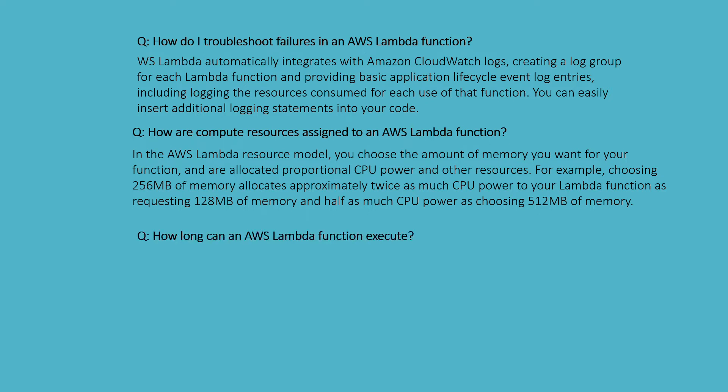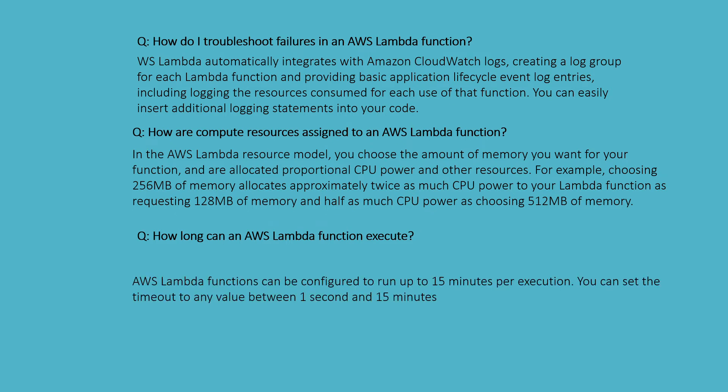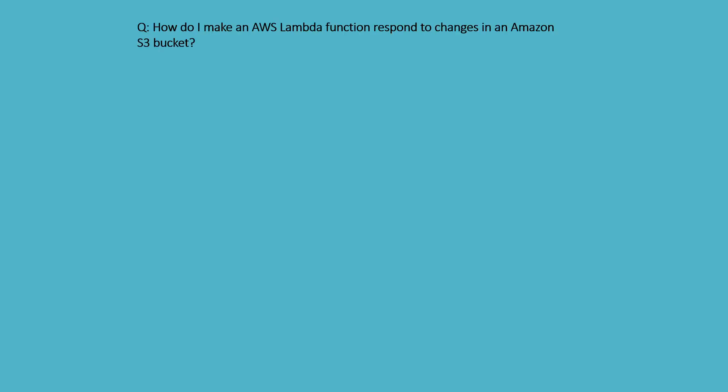How long can an AWS Lambda function execute? AWS Lambda functions can be configured to run up to 15 minutes per execution. You can set the timeout to any value from 1 second to 15 minutes.